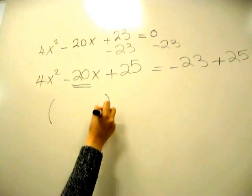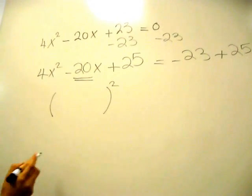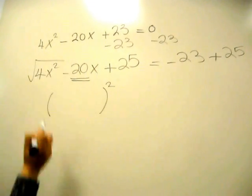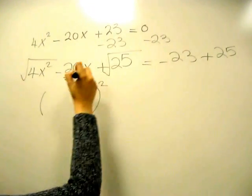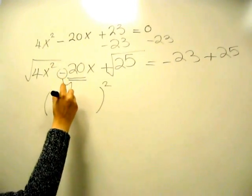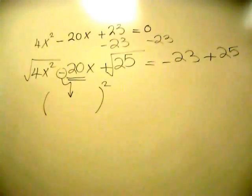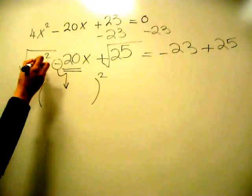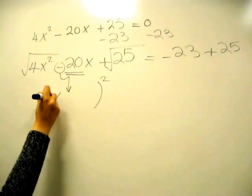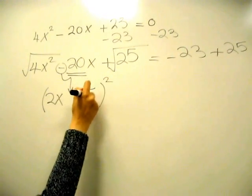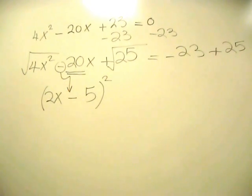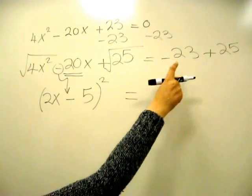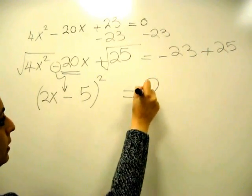Then you want to put that in perfect square form. We're going to do the square root of the first, square root of the last, and the sign of the middle. The square root of 4x² is 2x. The square root of 25 is 5. The sign of the middle is negative. That would equal -23 + 25, which is positive 2.